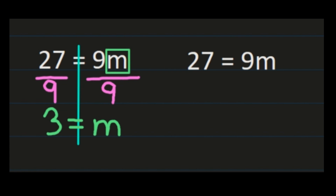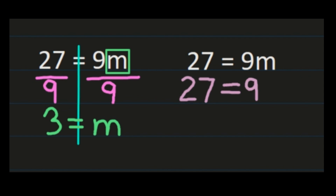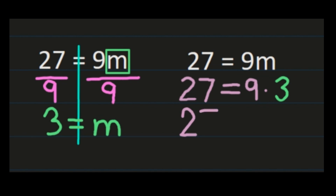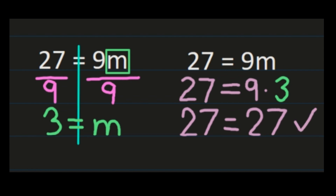We check it the same way as our other equations. We take our value for m, which is 3, and plug it in. So we have 27 equals 9 times 3, and we want to make sure that really is 27. Well, 9 times 3 is 27, so we get 27 equals 27 — that proves our work where we got m equals 3 is correct.